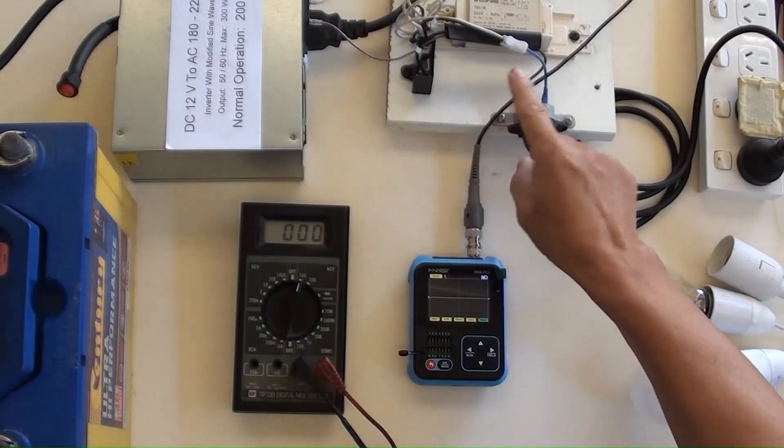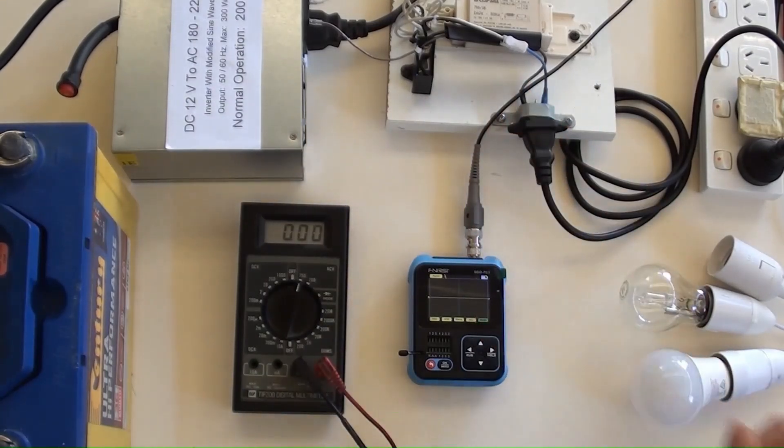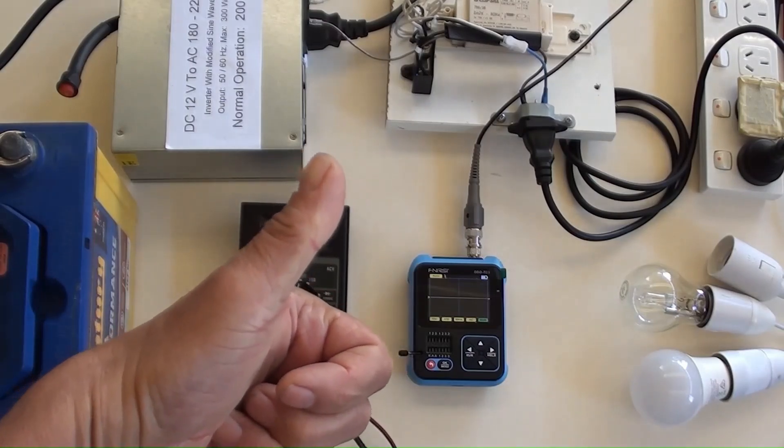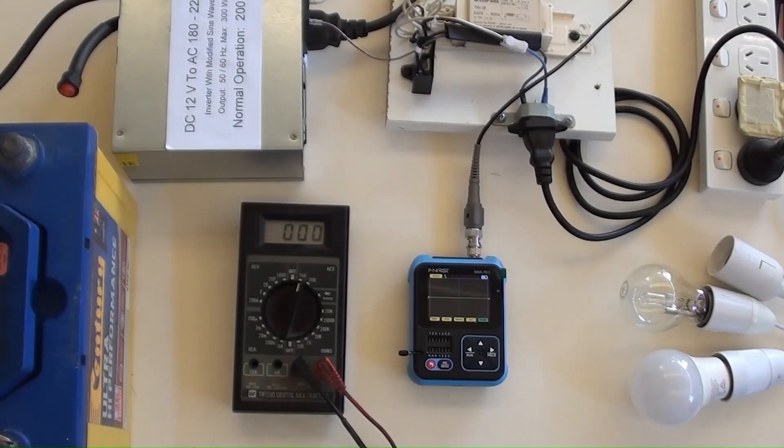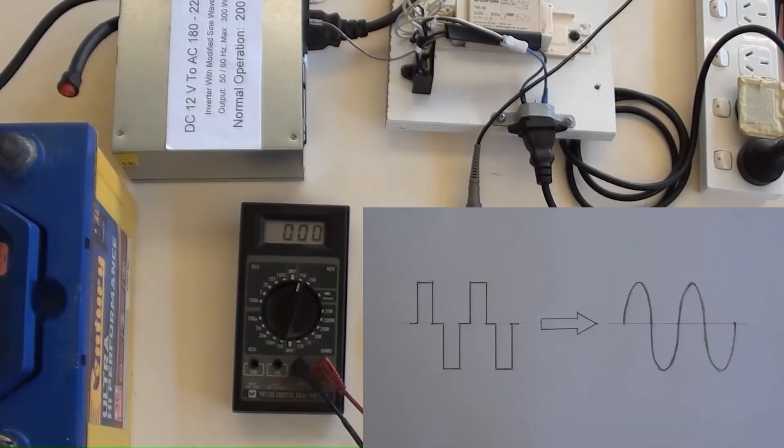By adding an inductor and a capacitor with their values appropriated, in fact the low filter circuit's components, we are able to convert a square wave inverter to a sine wave one. Now you've known how to convert an inverter with square wave to sine wave.